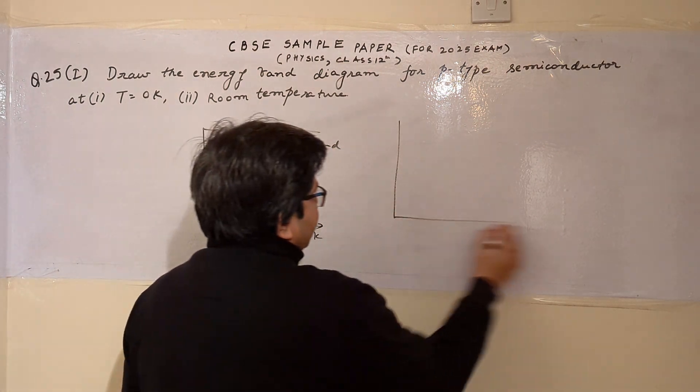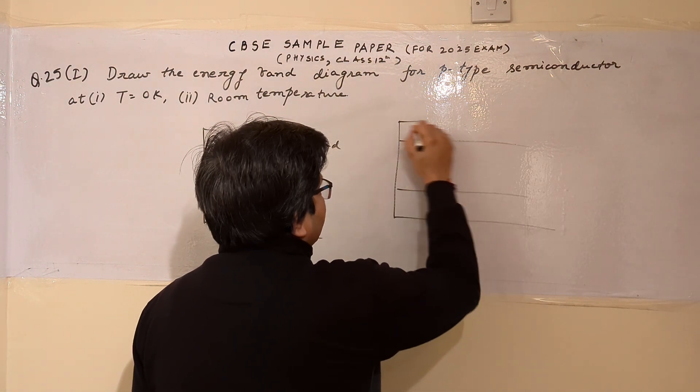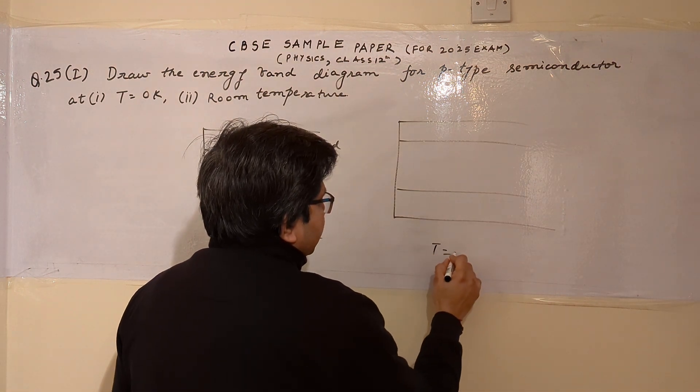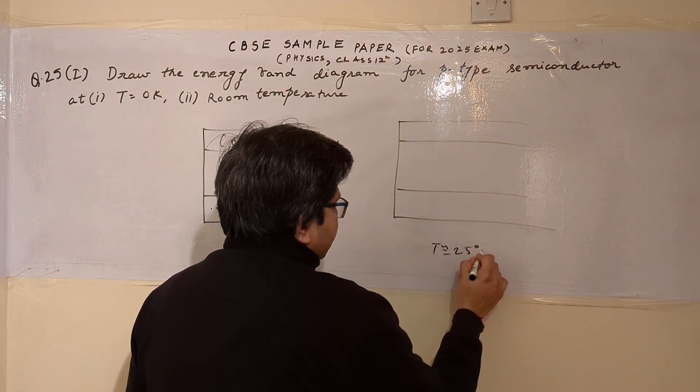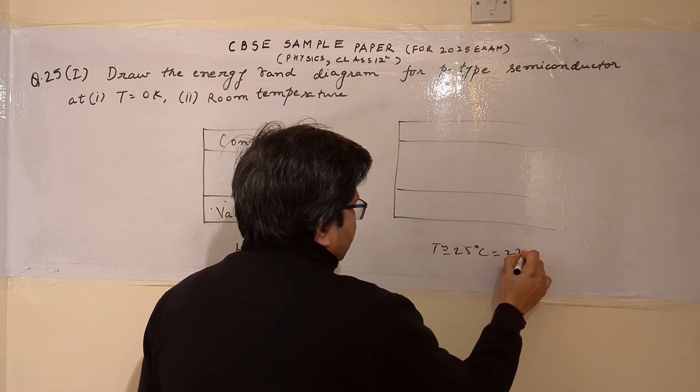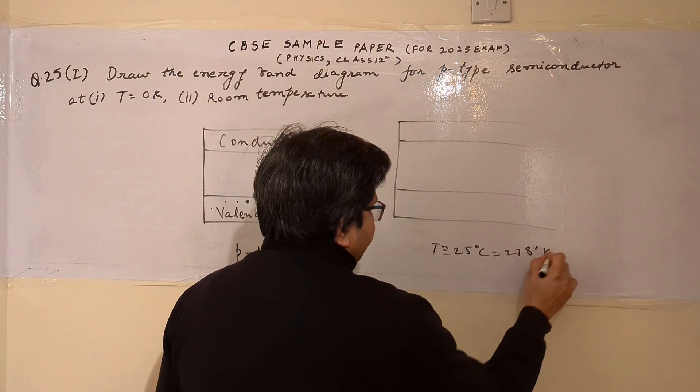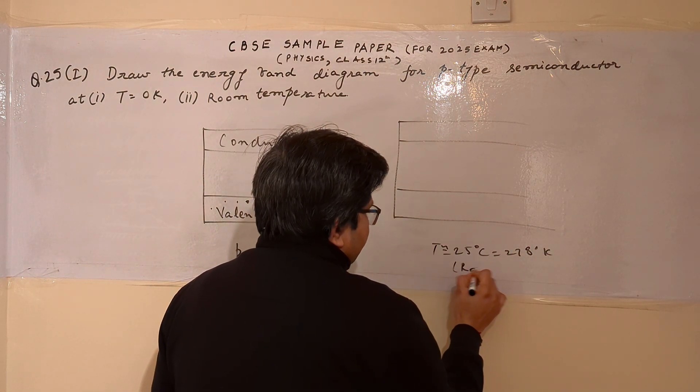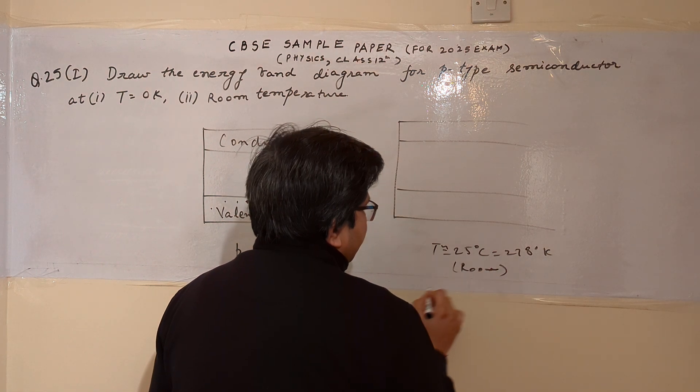Whereas, if the situation is at T ≈ 25°C, or we can say 278 Kelvin, nearly the room temperature. For example, if you take this as room temperature.